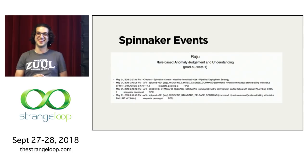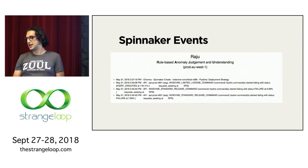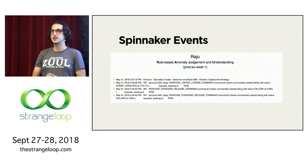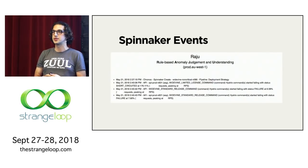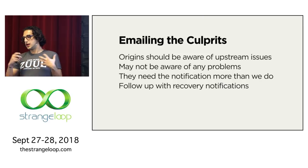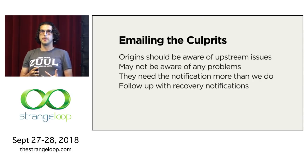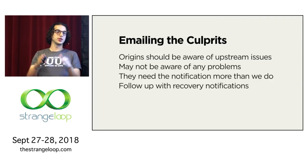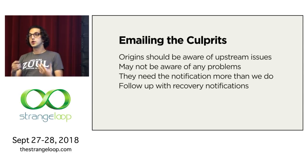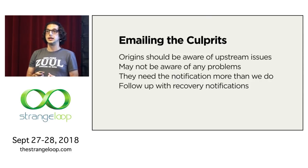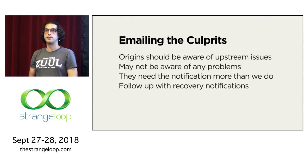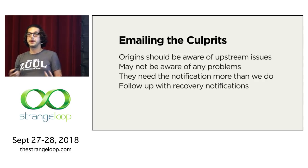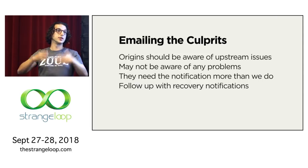We also added Spinnaker deployment events — our deployment framework. In one example, somebody pushes a service, and then the Hystrix command for that service breaks a minute later. As an operator, you can pretty quickly say 'let's roll back that push.' Finally, we started emailing the culprits directly. Origins sometimes aren't aware of the issue — if it's a connectivity issue, they may not even see it in their metrics. This gives them much better visibility into whether their service is in trouble. If it recovers, we send a follow-up with recovery info. This ultimately reduced the need for us to get paged on everything.